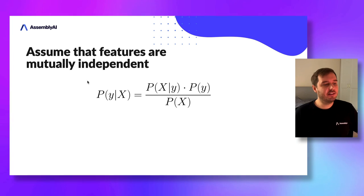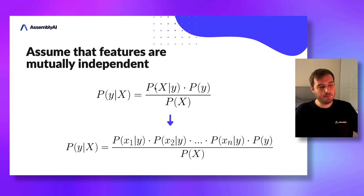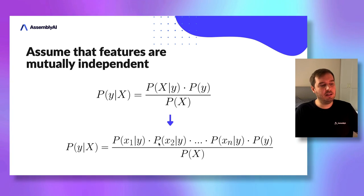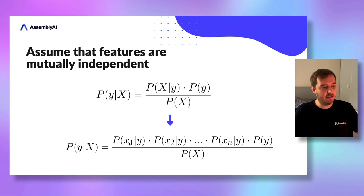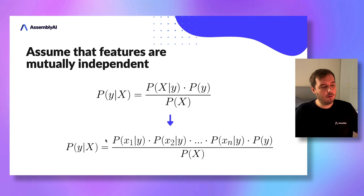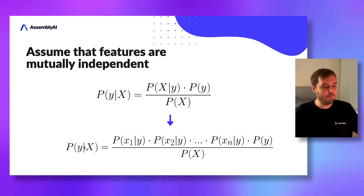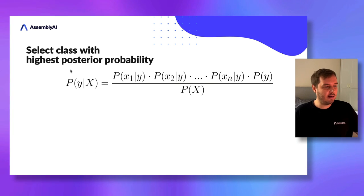With this independence assumption, we can split P(x|y) into individual components: the product of P(x1|y) times P(x2|y) and so on — one for each feature vector component. These individual probabilities are easier to compute. Now we want to select the class y with the highest posterior probability, so we take the argmax of P(y|x), which is also called the posterior.